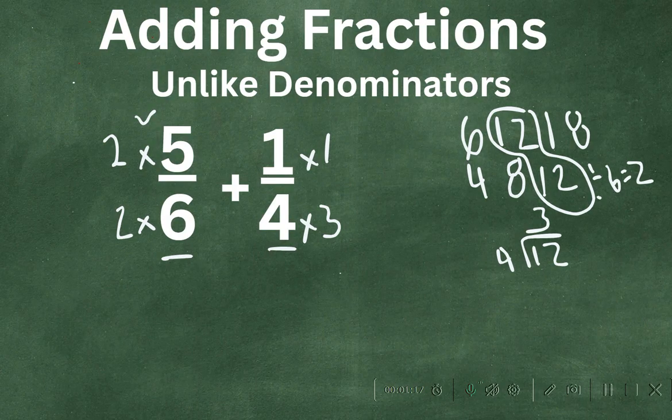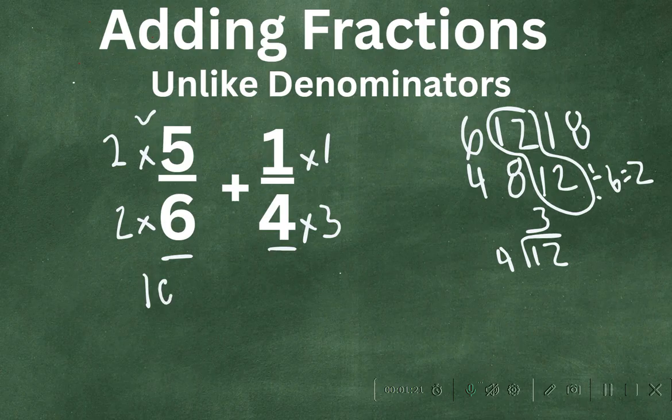So let's rename these fractions. 5 times 2 is 10, 6 times 2 is 12, and then we're going to add that to - excuse me, I wrote this wrong. It should be 3. 1 times 3 is 3, and 4 times 3 is 12.